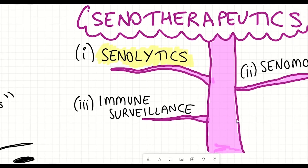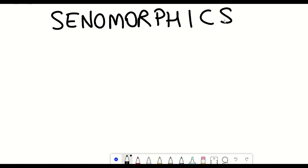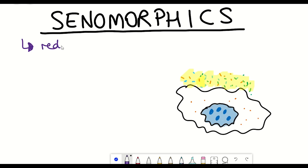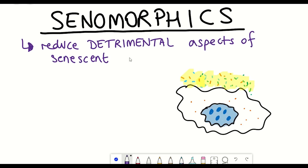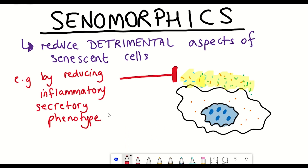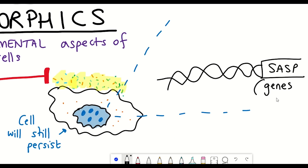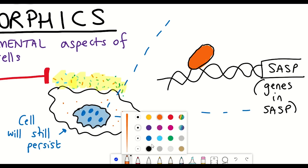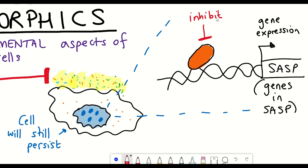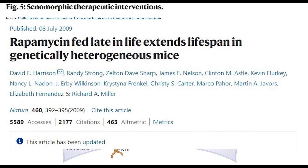How are senolytics different from senomorphics? As an alternative to killing senescent cells, senomorphics are proposed to act by limiting the detrimental impacts of senescent cells, largely through modulating the senescence-associated secretory phenotype — essentially trying to reduce the amount of inflammatory factors being secreted. This is done by inhibiting the proteins in a cell that drive the expression of SASP components. One key protein involved is the mammalian target of rapamycin, mTOR. Unsurprisingly, rapamycin, which inhibits mTOR, has been shown to extend lifespan in both male and female mice.